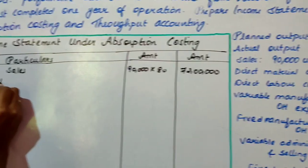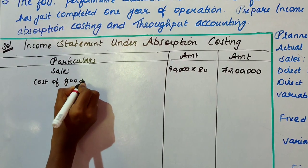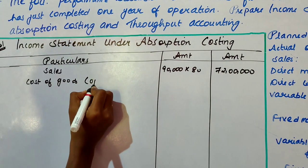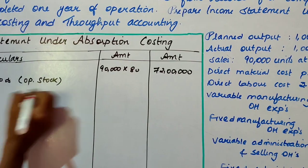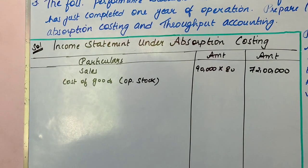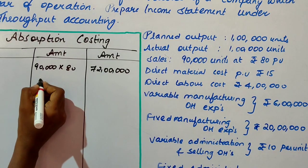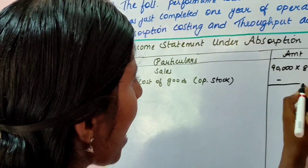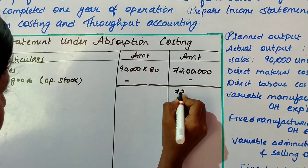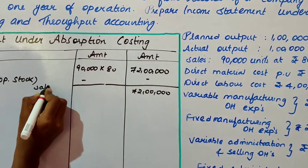90,000 into 80, you will get 72 lakhs. Add opening stock of goods. In the question, opening stock is not given, so when you add everything you will get 72 lakhs as your sales.